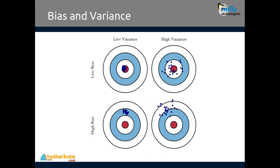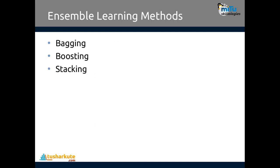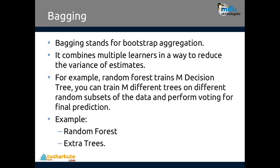The third error is irreducible error, which is just like outliers. We have to delete these outliers directly from the code to reduce this irreducible error. Three ensemble techniques are used to combine machine learning algorithms: bagging, boosting, and stacking. They use different mechanisms by which algorithms are combined to form more powerful models.